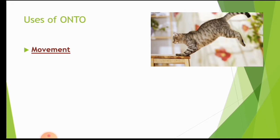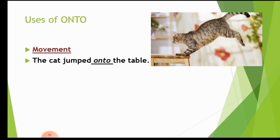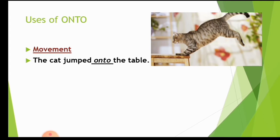For example, suppose the cat is sitting on the table — here we use 'on' because we are referring to the surface without movement. But if the cat jumped onto the table, we use 'onto' because there is movement involved.